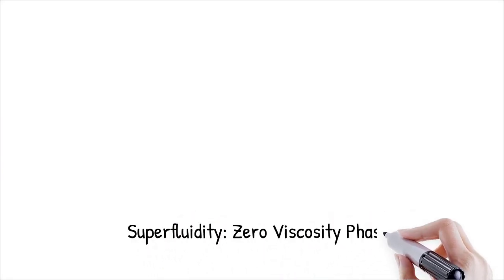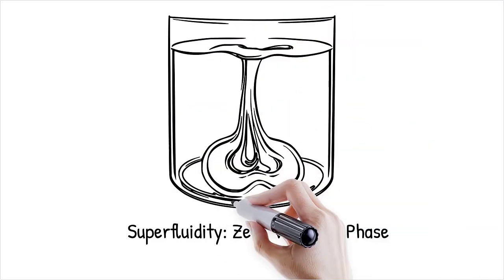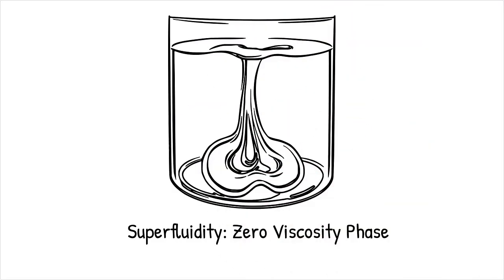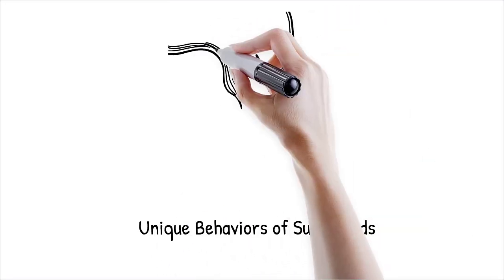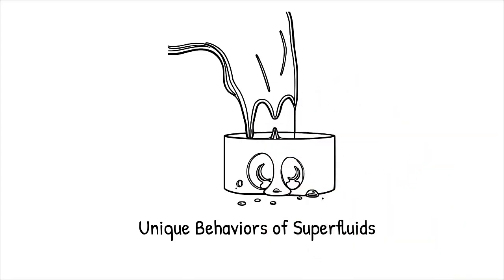Superfluidity is a phase of matter that occurs when certain liquids, such as helium-4, are cooled to near absolute zero. In this state, the liquid exhibits zero viscosity, meaning it can flow without losing energy. Superfluids can climb walls, flow through tiny pores without resistance, and form persistent vortices.